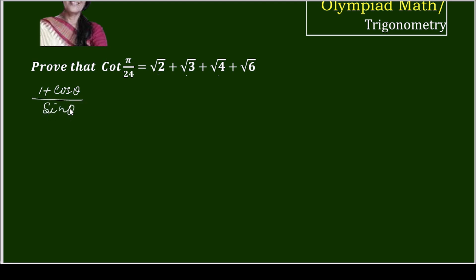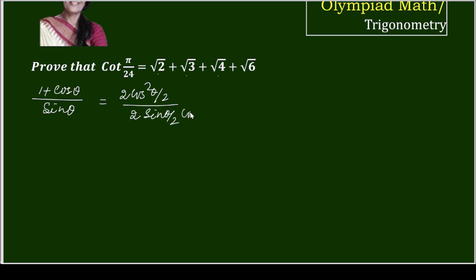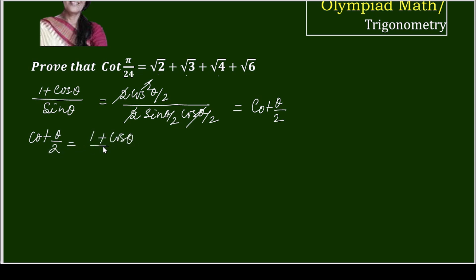I will apply the formula: (1 + cos θ)/sin θ. On simplification, 1 + cos θ equals 2cos²(θ/2), and sin θ equals 2sin(θ/2)cos(θ/2). The 2 and one cos cancel, giving cos(θ/2) = (1 + cos θ)/sin θ.